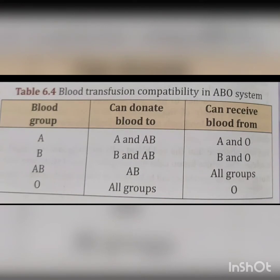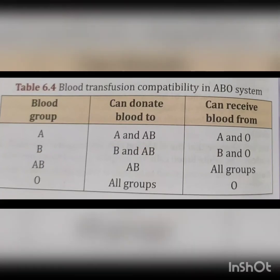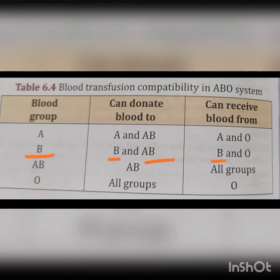Here is a description of which blood groups can donate to which, and can receive from which. Blood group A can donate blood to A and AB, and can receive blood from A and O. Blood group B can donate blood to B and AB, and can receive blood from B and O.